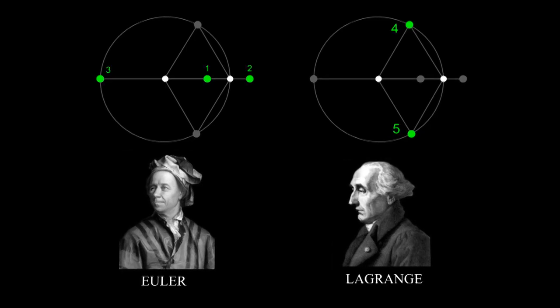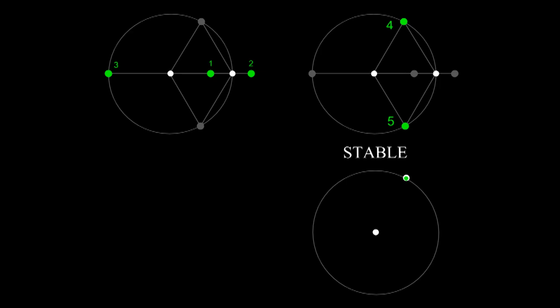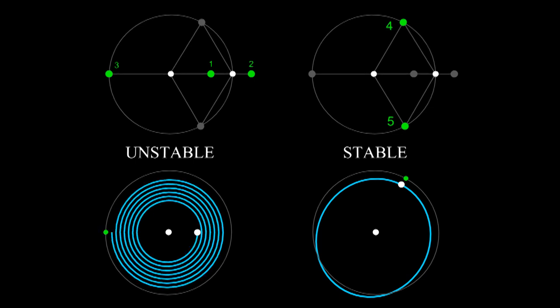The last two Lagrange points are stable. This means that if an object is slightly off from the point its orbit will shift slightly but not too much. The first three points are unstable. This means that if an object is just slightly off from the point it will just move further and further away.